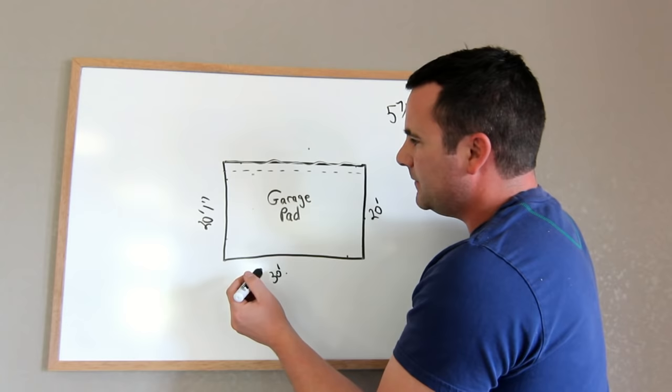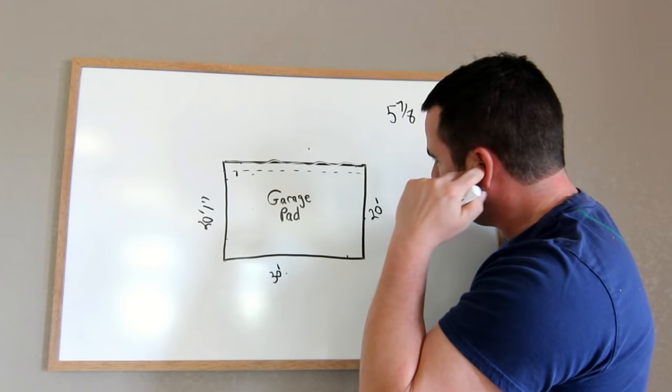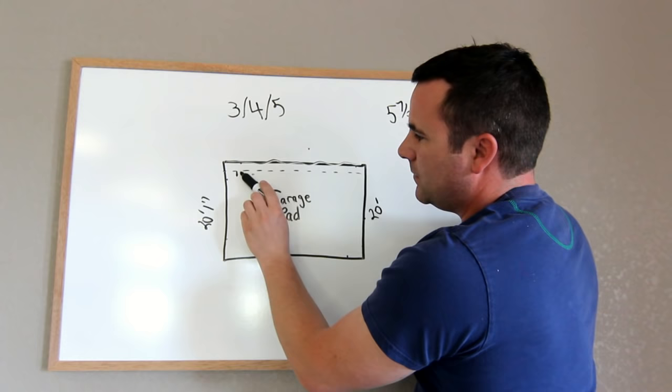Then, what I would do is I would measure in the same amount, and I would make a mark just right there. So then, from this point, I can use the 3-4-5 rule to figure out square. And we're going to make this corner square.